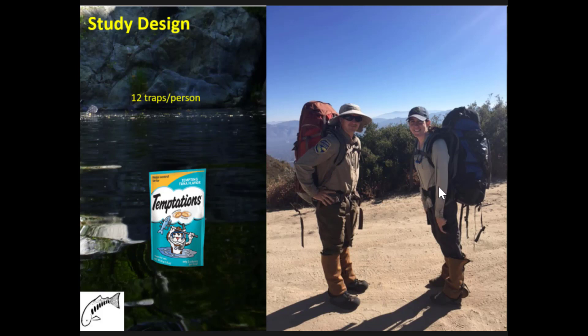We designed a study with two objectives. The first was simply to reduce the population—we've all dealt with invasive species enough to know this would be like mowing the lawn, requiring repeated efforts. The second objective was to go back using a depletion estimator and estimate the number of fish initially present.